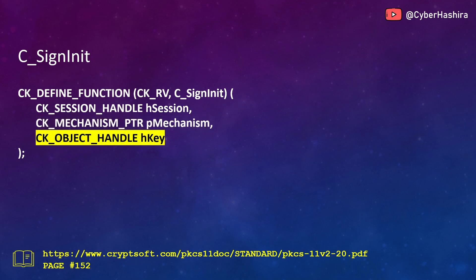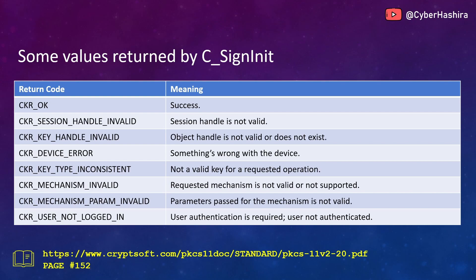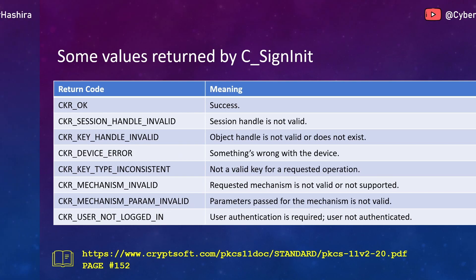As you may know, a private key is necessary for signing data. Hence, the third argument will be the handle number of a private key. These are some return codes that C_SignInit may return. More information about C_SignInit is available on page 152.